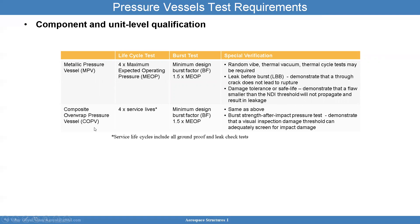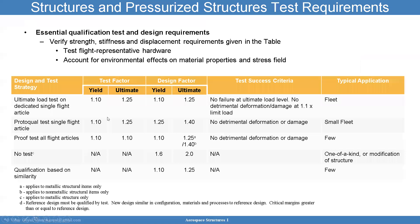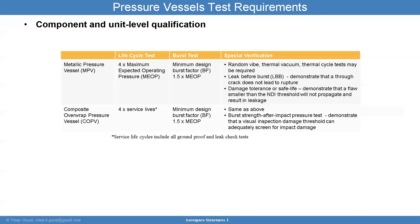For composite overwrap pressure vessels, the 4x service life factor applies as well. The design factor is 1.5, and burst strength after impact pressure testing needs to be demonstrated — if you have some sort of impact damage event, the composite overwrap pressure vessel must survive it. There is a large set of requirements in S081B that are covered in the second portion of this class, including component unit-level qualifications.